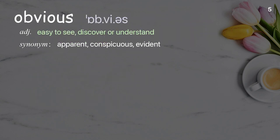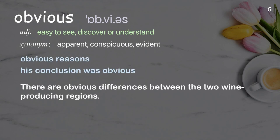Obvious: easy to see, discover, or understand. Examples: Obvious reasons. His conclusion was obvious. There are obvious differences between the two wine-producing regions.